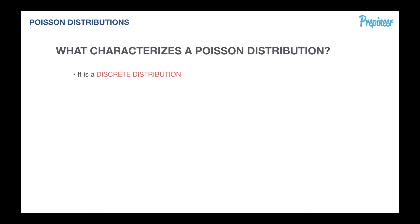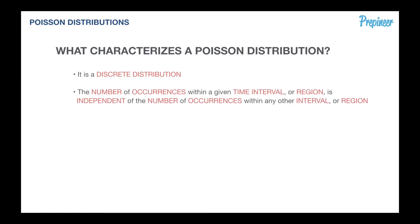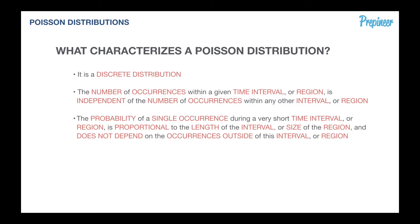It's a discrete distribution based on the number of occurrences or events within a given time interval or region. The probability of a single occurrence during a very short time interval or region is proportional to the length of the interval or size of the region and does not depend on occurrences outside of this interval or region. Essentially, the events and occurrences are both random and independent of any other event occurring. The mean number of events or occurrences is constant throughout the experiment.